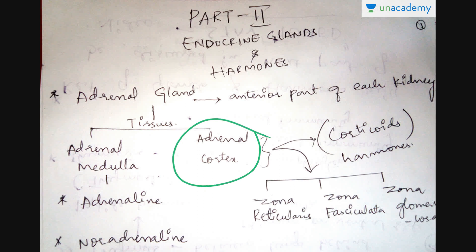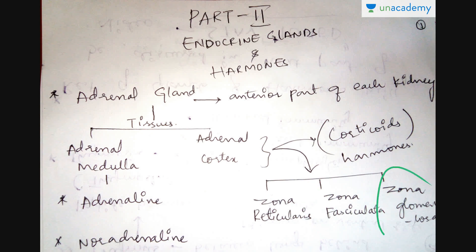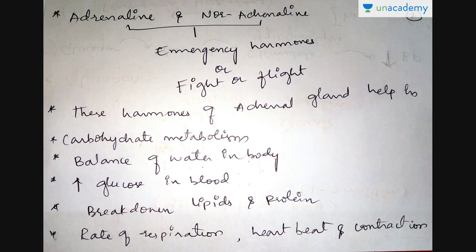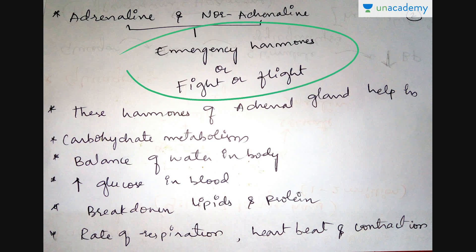The adrenal cortex has three layers or three parts: the first is called zona reticularis, the second is zona fasciculata, and the third is zona glomerulosa. Adrenaline and noradrenaline are called emergency hormones or fight-or-flight hormones. These are very important during our reflex actions.